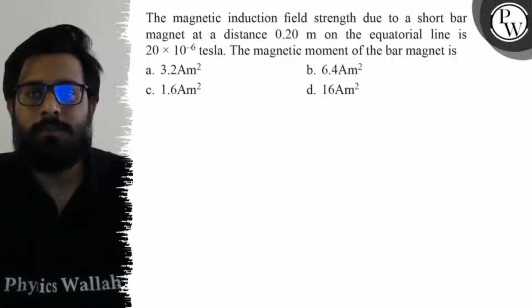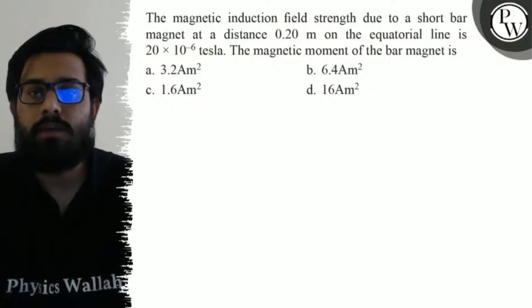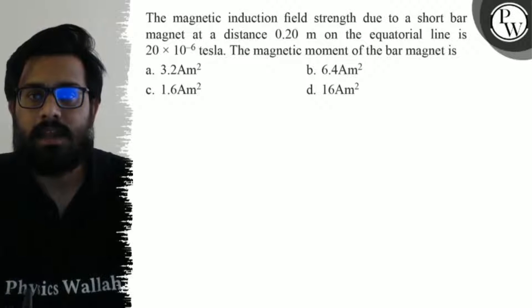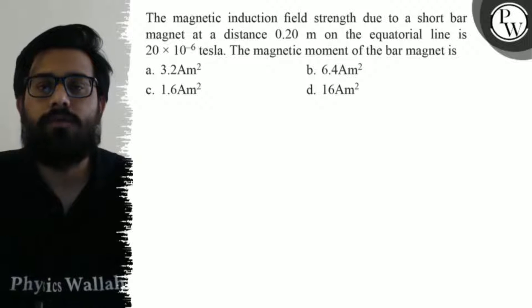Hello bachos, let's see the question. The magnetic induction field strength due to a short bar magnet at a distance of 0.20 meter on the equatorial line is 20×10^(-6) tesla. The magnetic moment of the bar magnet is: first option says 3.2 ampere-meter squared, second option says 6.4 ampere-meter squared.